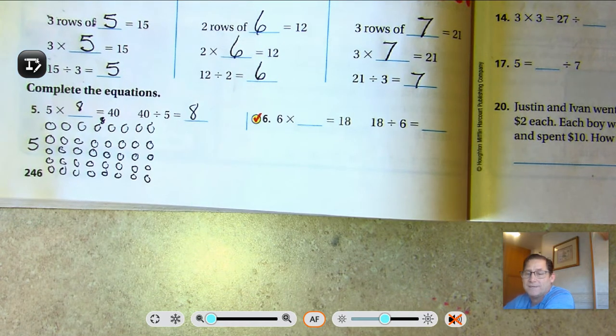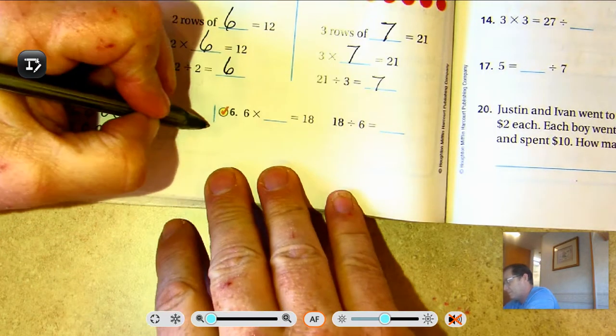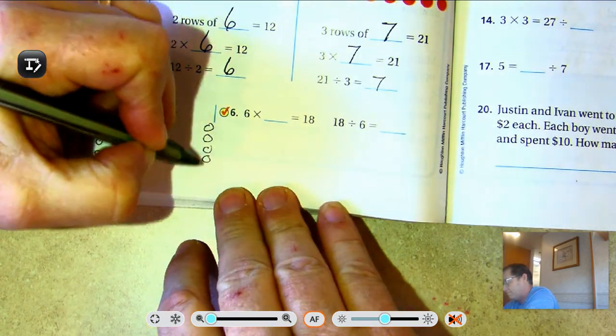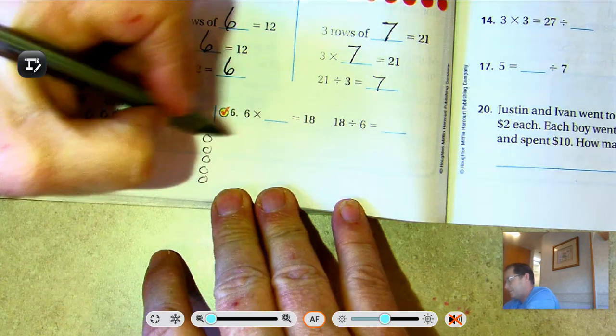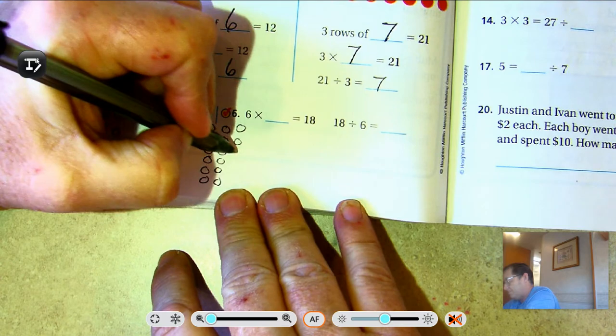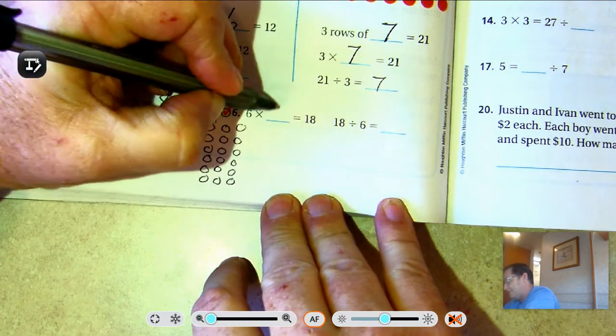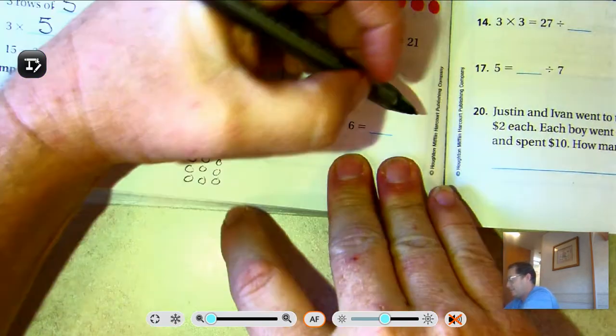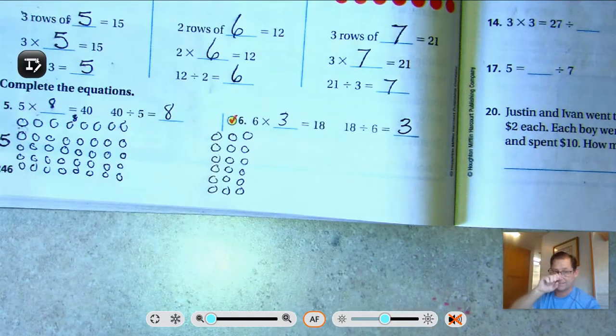Six times what is 18? Six, twelve, eighteen. Six times three is 18. So 18 divided by six is three.